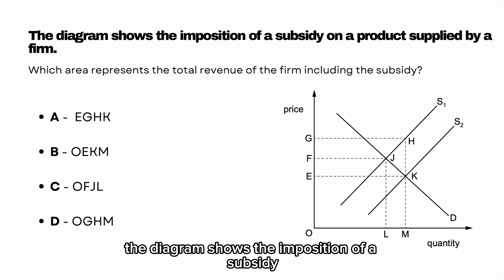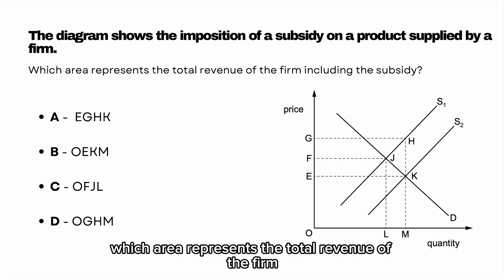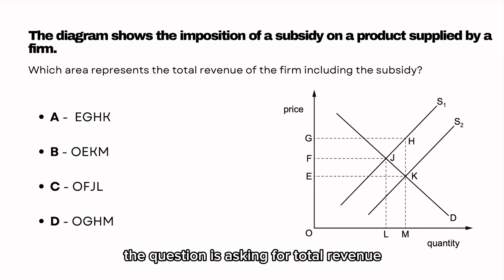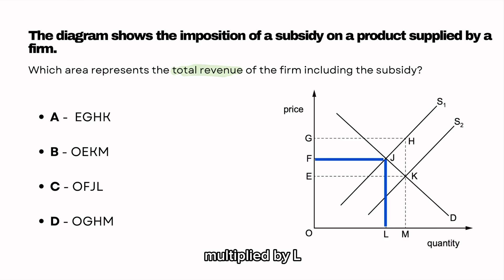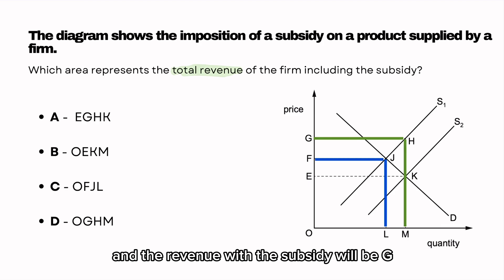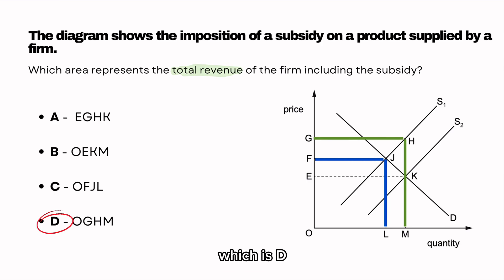The diagram shows the imposition of a subsidy on the product supplied by a firm. Which area represents the total revenue of the firm including the subsidy? The question is asking for total revenue, which is price multiplied by quantity. Total revenue without the subsidy would be F multiplied by L, and revenue with the subsidy would be G multiplied by M. So this gives us the answer OGHM, which is D.